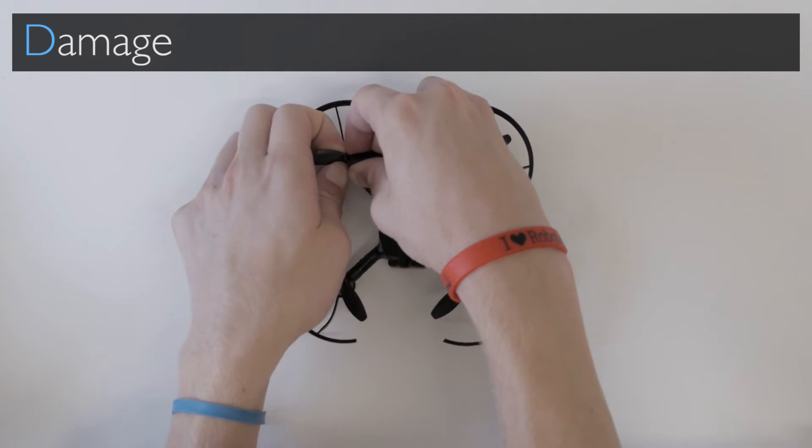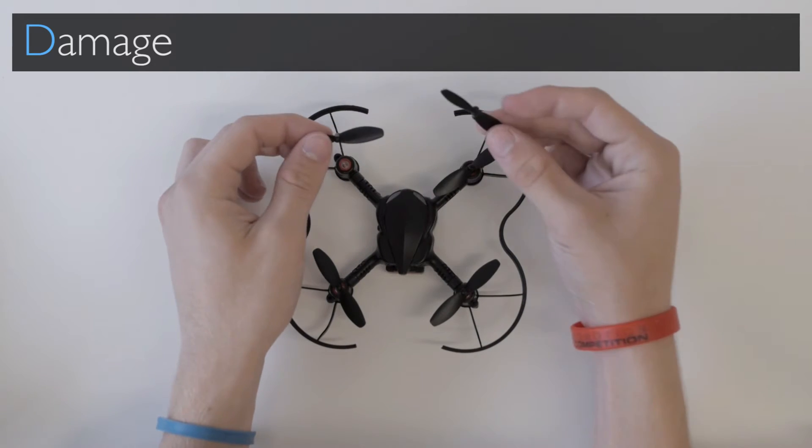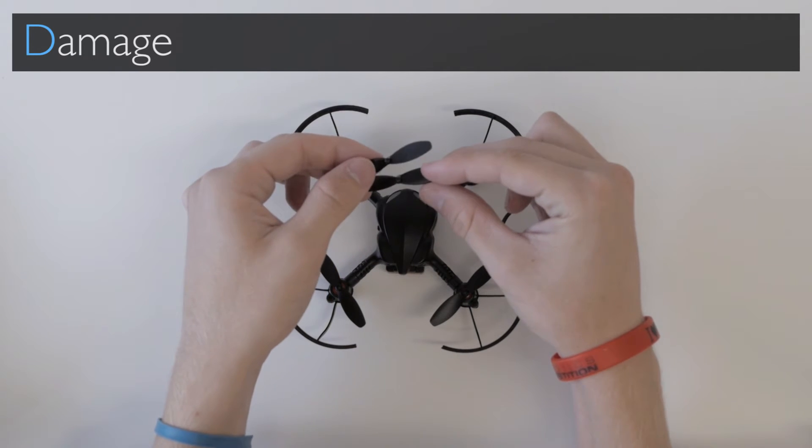You just pull off the broken one, just straight up, and then we can use another propeller that has the same arrows on it. It's very important.